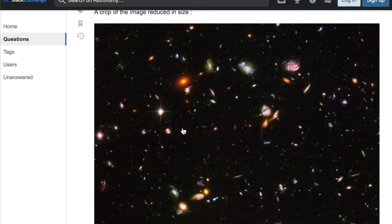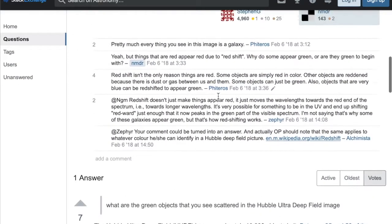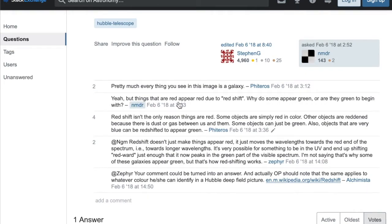So, there are no green stars, but there are green galaxies. Well, that's interesting. An entire galaxy entirely made of green. I was wondering, what are the green objects that you see scattered in the Hubble Ultra Deep Field image? Yeah, but things that are red appear red due to redshift. Why do some appear green or are they green to begin with? Redshift isn't the only reason things are red. Some objects are simply red in color. Other objects are reddened because there is dust or gas between us and them. Well, that could be a reason there's redshift. There's so many other explanations for red stars.